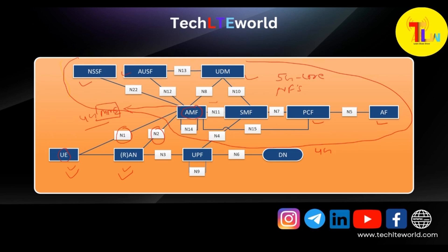In the point-to-point architecture of 5G, we have direct connectivity with different nodes. You can see AMF is directly connected with NSSF, and AMF is directly connected with AUSF for authentication and SMF for session management functionalities. AMF also has direct connectivity with PCF through the N15 interface.